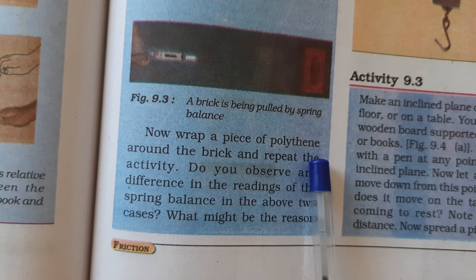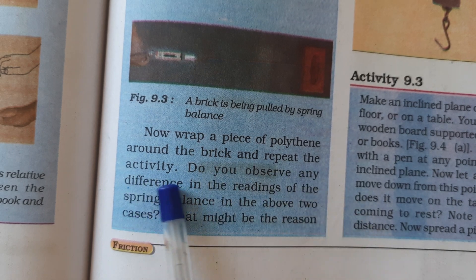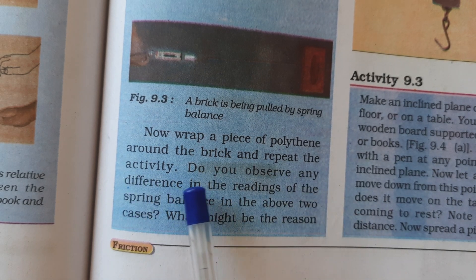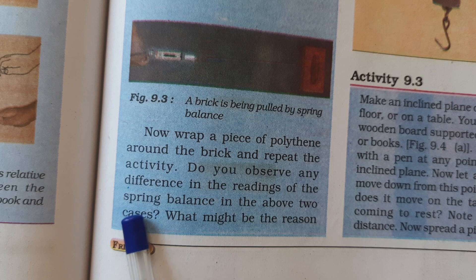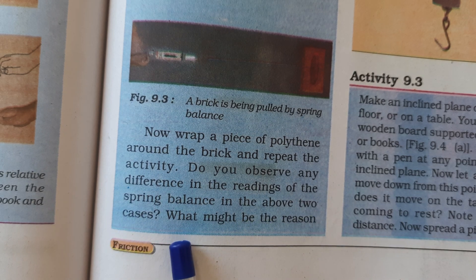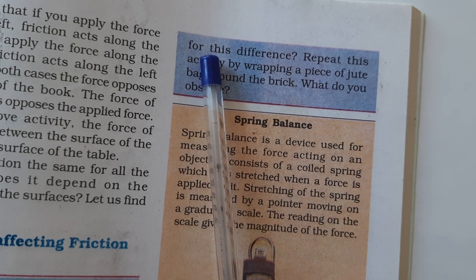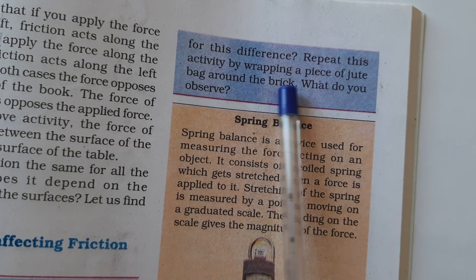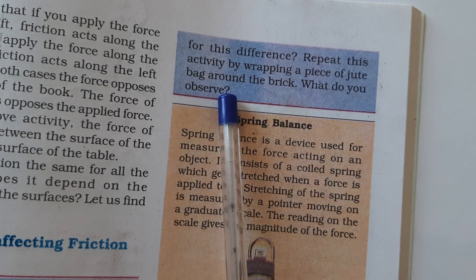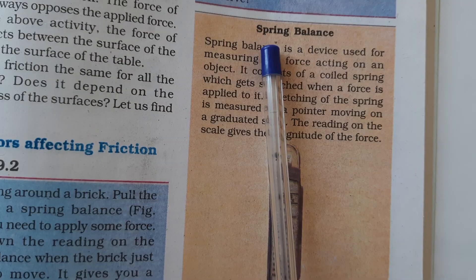Now wrap a piece of polythene around the brick and repeat the activity. Do you observe any difference in the readings of the spring balance in the two cases? What might be the reason for these differences? Repeat this activity by wrapping a piece of jute bag around the brick.